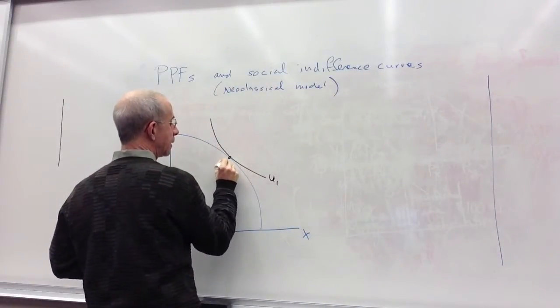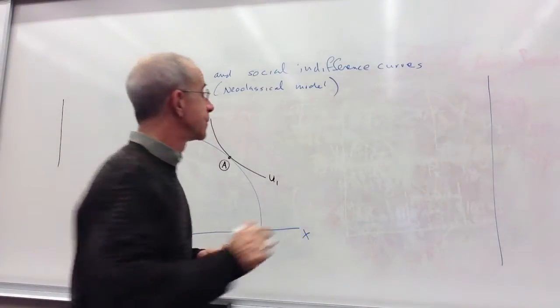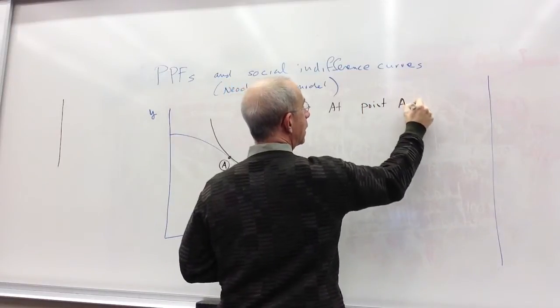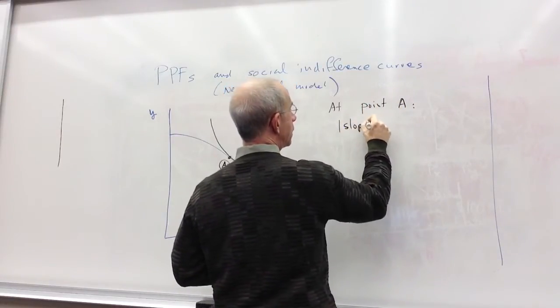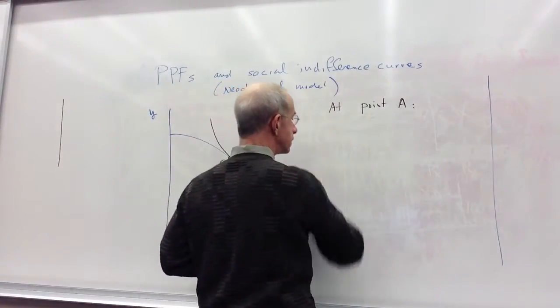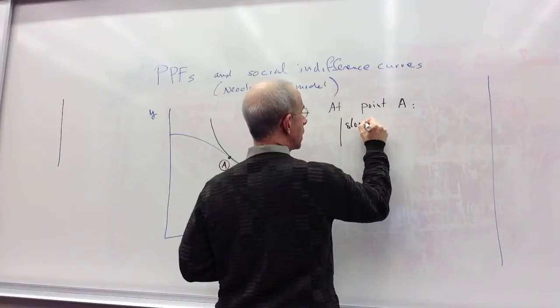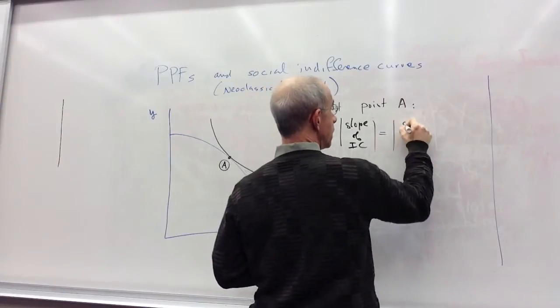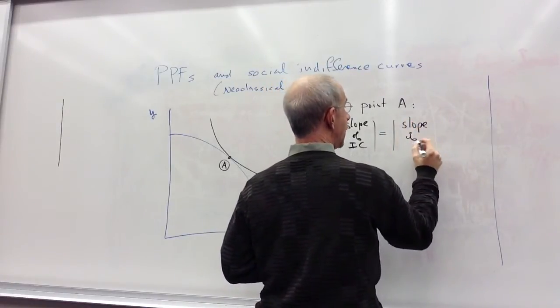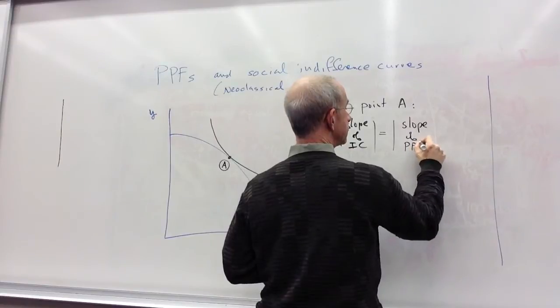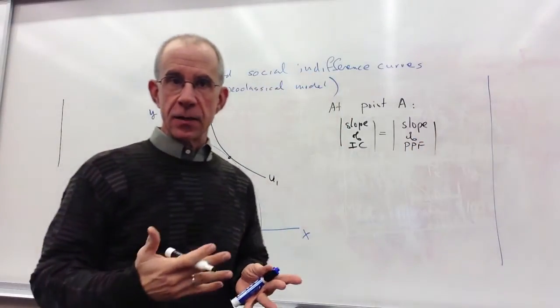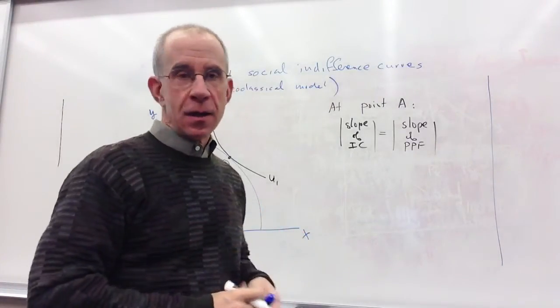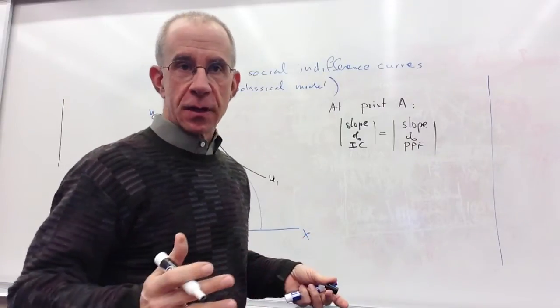So let's think about this point A. So at point A, the slope of the indifference curve, the social indifference curve, is equal to the slope of the PPF. So just geometrically, that is true. But if we sort of unpack that, we can see some of the relationships that you know from a standard introductory micro course.